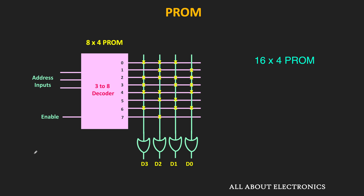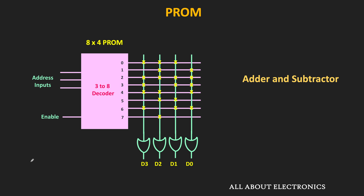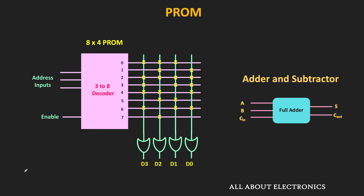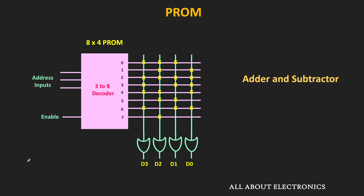So suppose if we have a 16x4 ROM, then we can implement four different functions of four variables. And if instead we have a 16x8 ROM, then we can implement eight different functions of four variables. Let us take one example and see how to implement a full adder and full subtractor circuit using this 8x4 PROM. The full adder circuit has two outputs — sum and carry — and the full subtractor circuit also has two outputs — difference and borrow. So in total we require four outputs. Both the full adder and full subtractor consist of three inputs, so using the 8x4 ROM it is possible to implement this circuit.